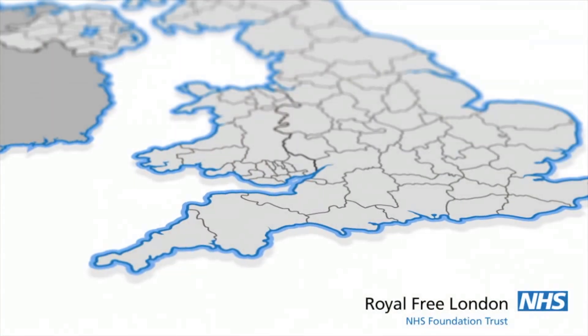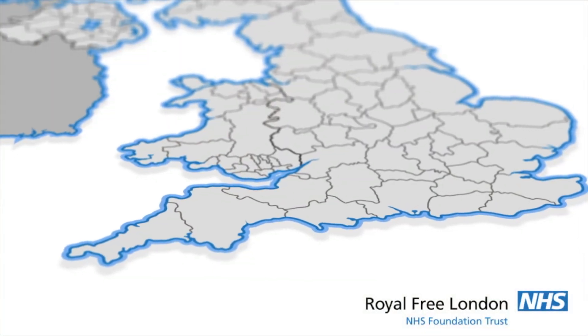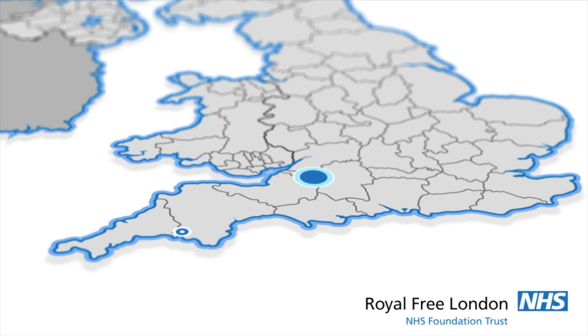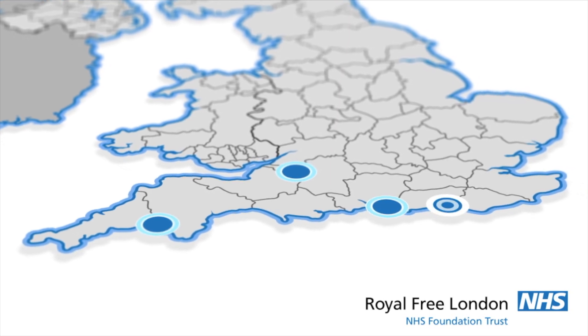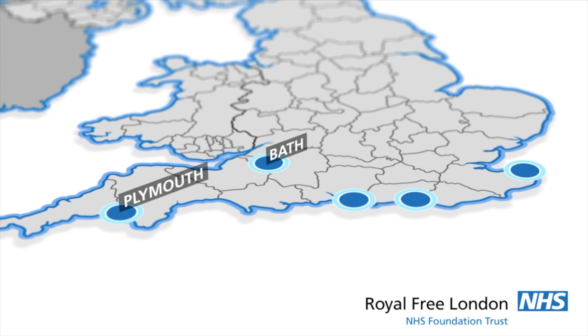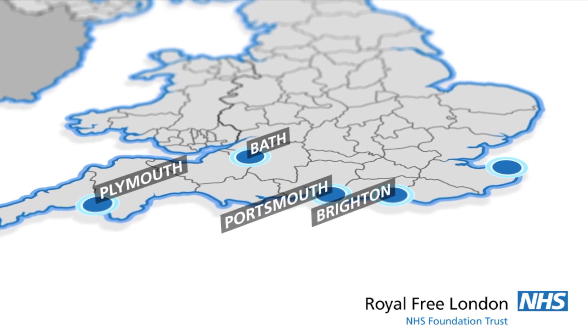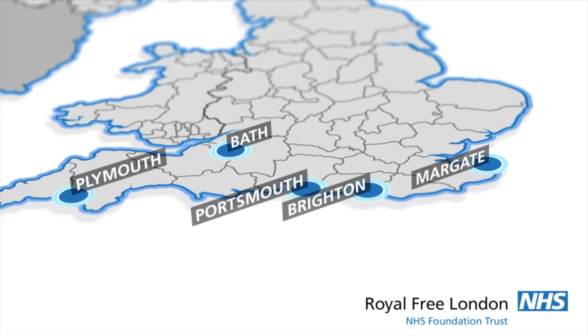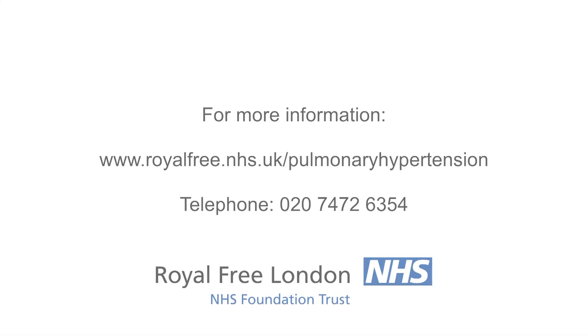So that we can see you near your home, the Royal Free has a network of shared care centres serving the south of England, including Bath, Plymouth, Portsmouth, Brighton and Margate. We'll do everything we can to help you with your condition, offering you the best care, advice and support. If you have any questions, please do get in touch with us on our advice line.